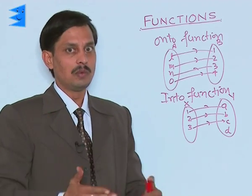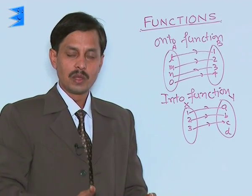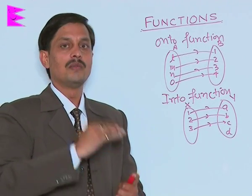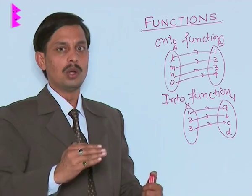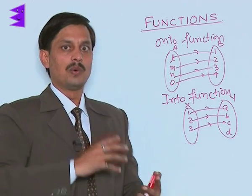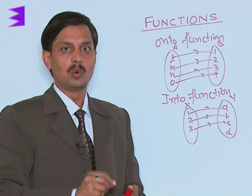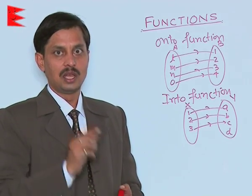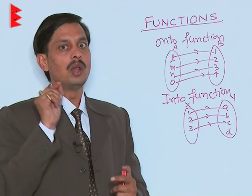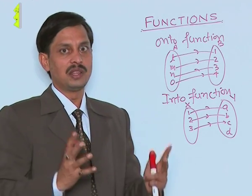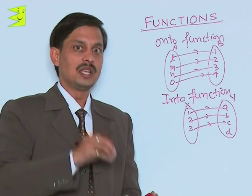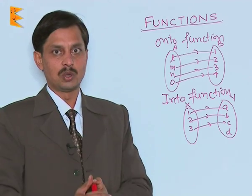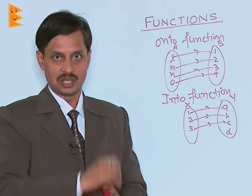By combining one-one, many-one, onto, and into, we can create four types of functions: one-one onto, one-one into, many-one onto, and many-one into. The one-one onto function is also known as bijection. The name for a one-one function alone is injection. If it is onto, we say surjection. But if it is both one-one and onto, we call the function a bijection.